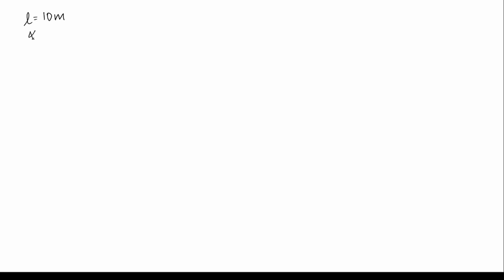In this question, the length of each rail is 10 meters, so length L is equal to 10 meters. The linear expansion coefficient of steel, alpha, is equal to 12 into 10 to the power of minus 6 per degree Celsius. The range of variation of temperature, delta T, is equal to 15 degree Celsius.